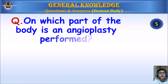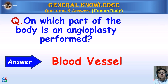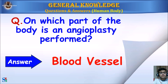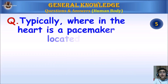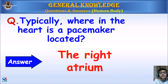On which part of the body is an angioplasty performed? Answer: Blood vessel. Typically, where in the heart is a pacemaker located? Answer: The right atrium.